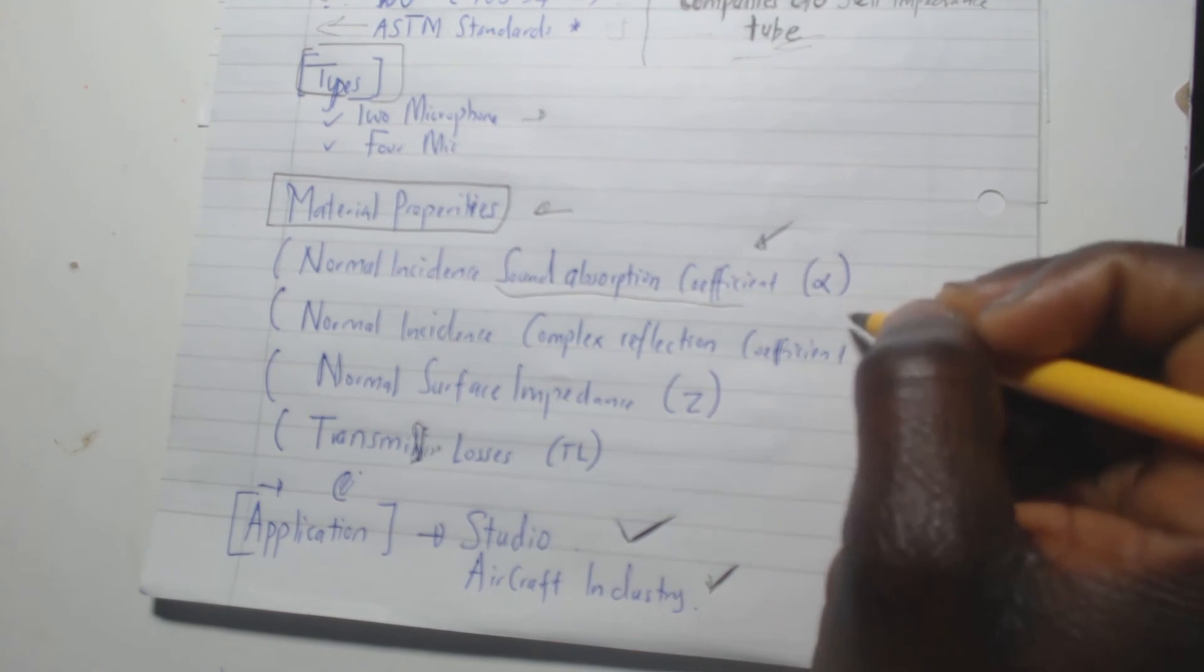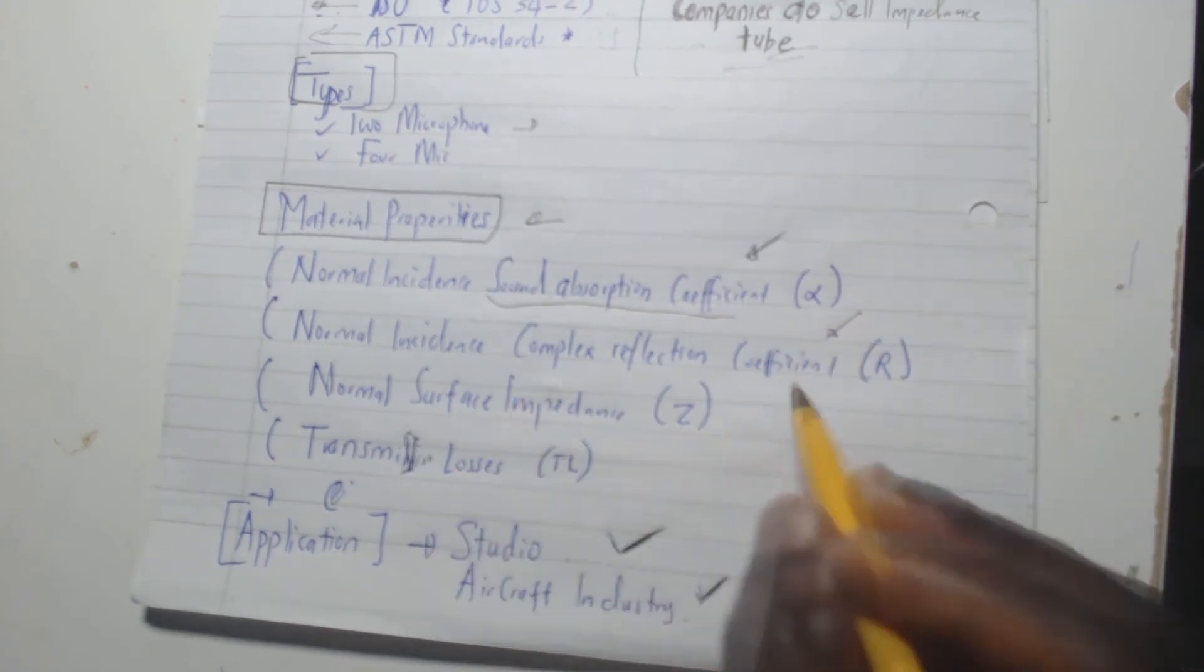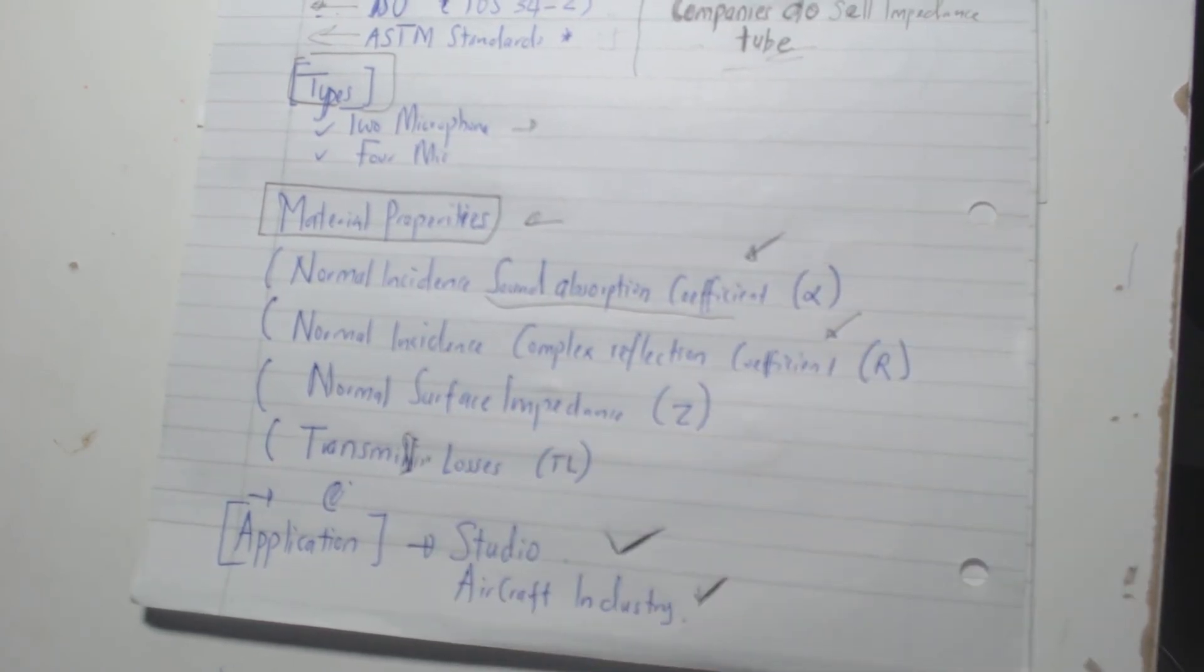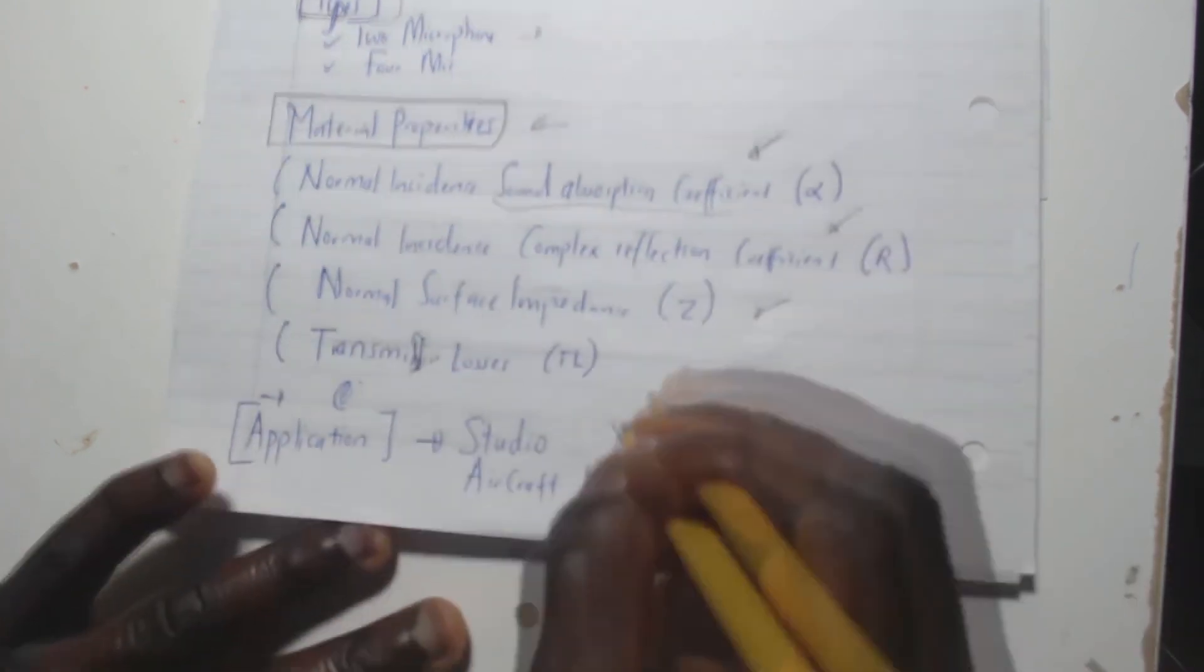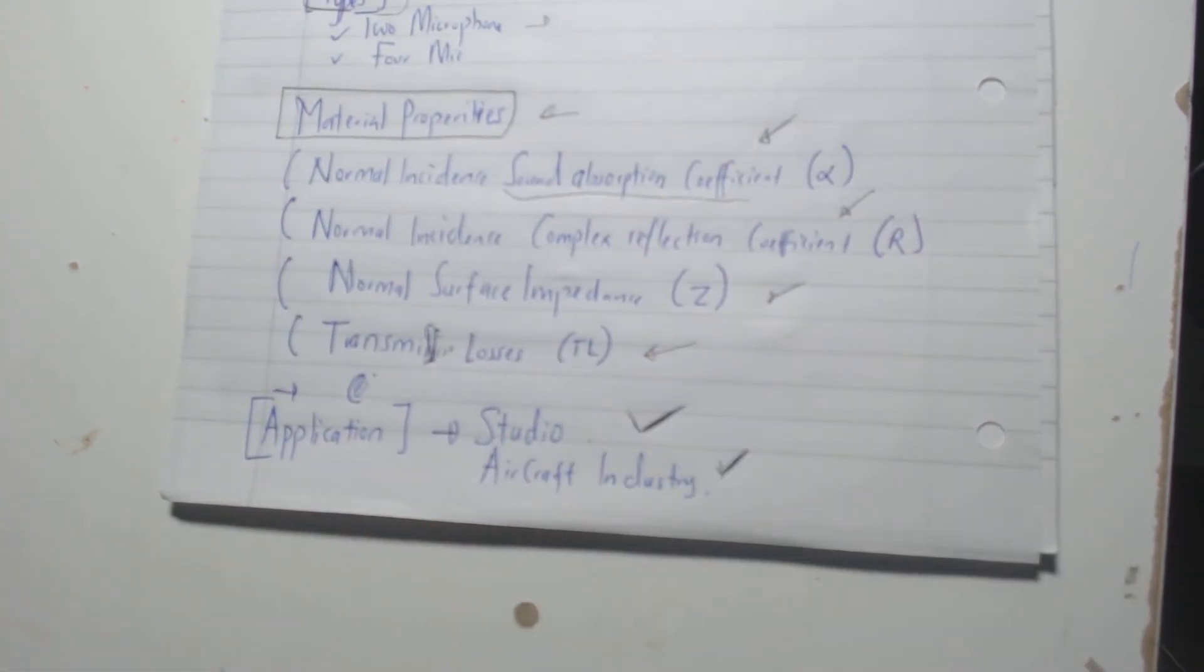And these are: first of all, we are interested in the sound absorption coefficient alpha. There are expressions for this, so I'll introduce that later on. The reflection coefficient, also there's an expression for that as well. And then the impedance also. And lastly, we have the transmission loss. All right, that's it for this video. Check part two where we continue on the theory and more.